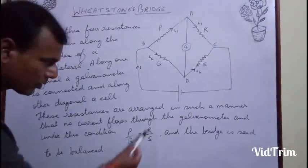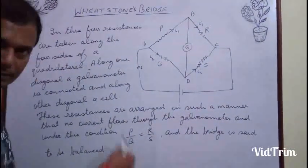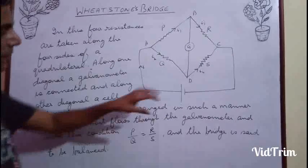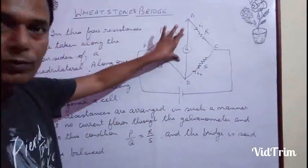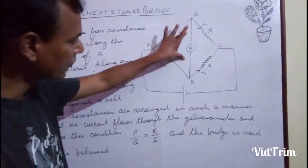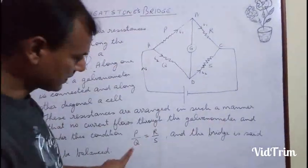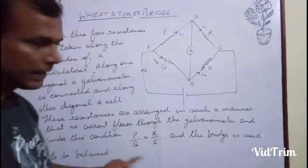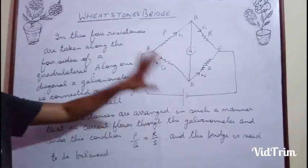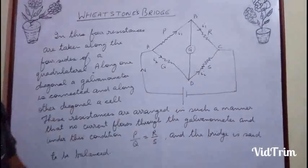And the bridge is said to be balanced. If P upon Q equals R upon S, no current flows. If no current flows, this condition is satisfied, and we say that the bridge is balanced.